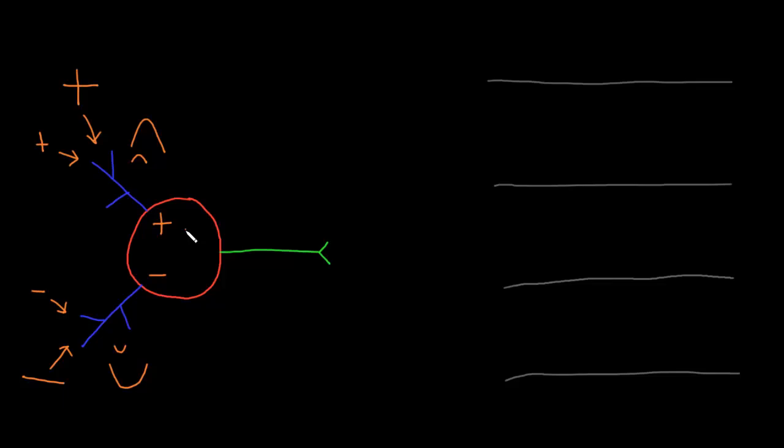Neurons process that information by summation of the graded potentials at the trigger zone to determine if an action potential will be fired down the axon. Action potentials, however, are consistently the same size and duration for any given neuron, so the information contained in the graded potentials is instead converted into a temporal pattern, or a timing, of action potentials being fired down the axon.